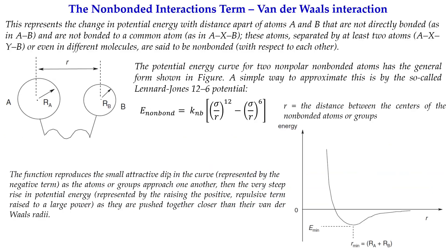Next we discuss the non-bonded term, which represents the change in potential energy with distance between atoms not directly connected through a common bond. The atoms must be separated by at least two intervening atoms, like A-X-Y-B, or may be in different molecules entirely. This type of potential energy can be expressed by the Lennard-Jones potential, which is used to describe two non-polar, non-bonded atoms.